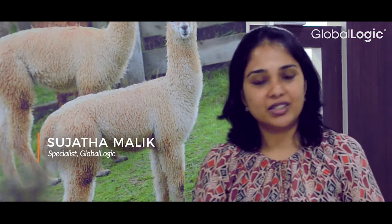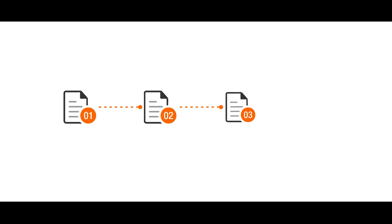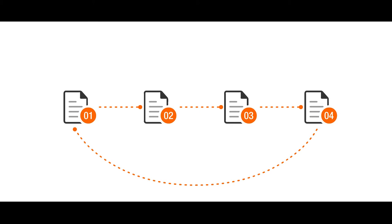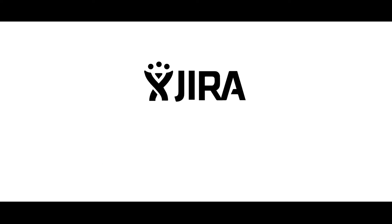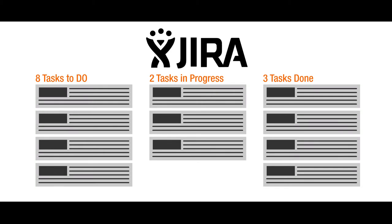A few years back we moved to Agile methodology. So everything is in the form of scrums, small iterations. Every three weeks we go through the notion of design, development, QA and release. We use a tracking tool called Jira for our development.